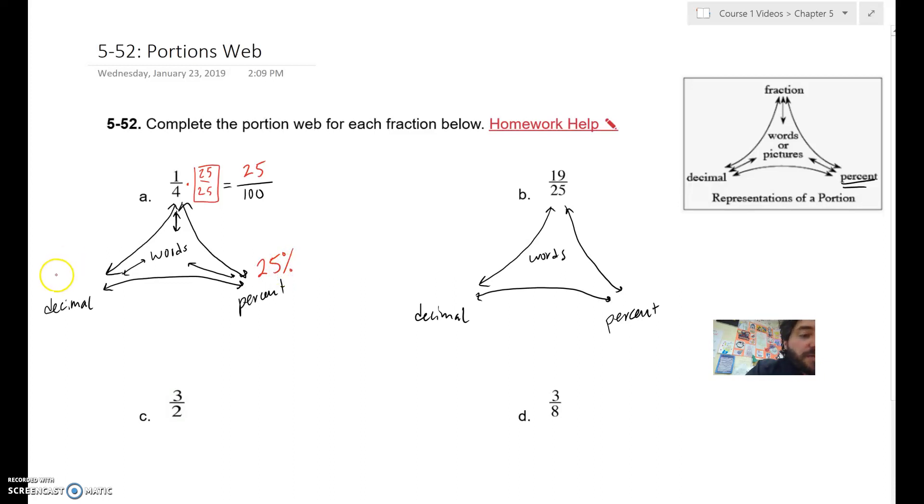So percents are out of 100. I know that 25 out of 100 would be 25%. As a decimal, the hundredths place is the ones place, tenths place, hundredths place.